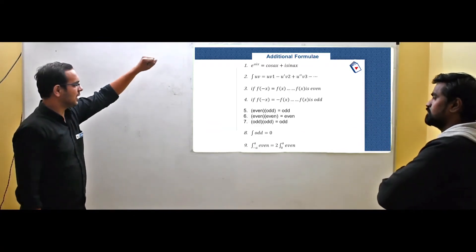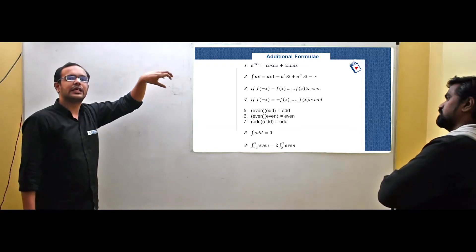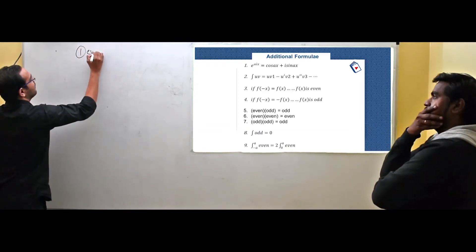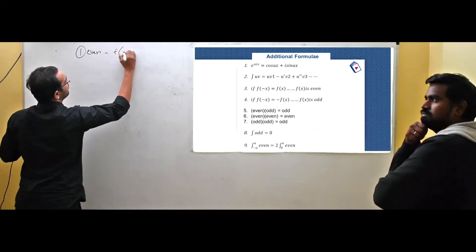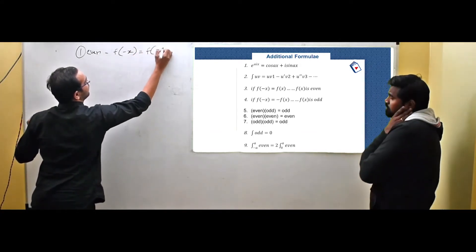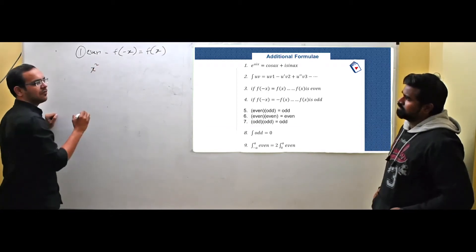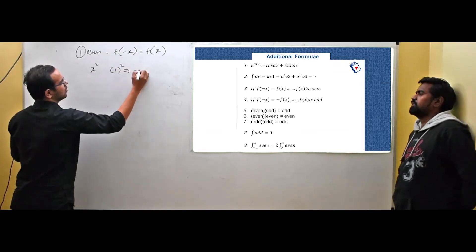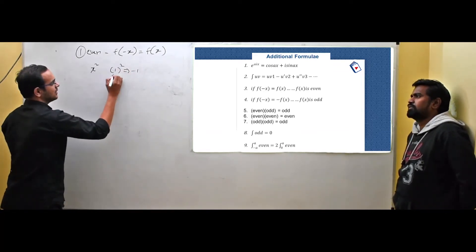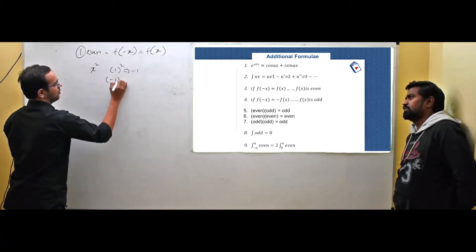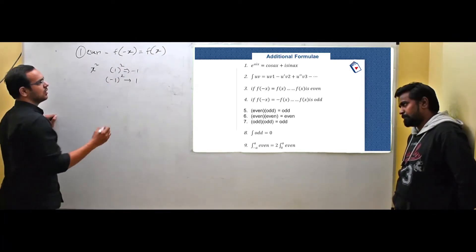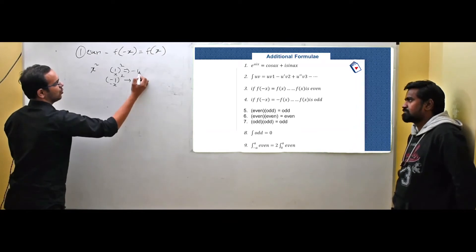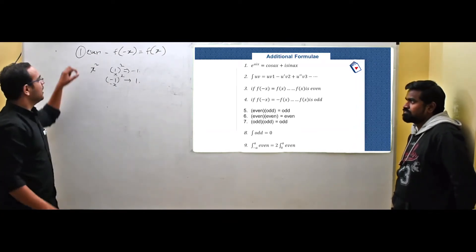The other prerequisite formula involves even functions and odd functions. An even function is defined as: f of minus x equals f of x. For example, x squared is an even function. If x equals 1, then x squared equals 1, and if x equals minus 1, then x squared also equals 1. So f of minus x equals f of x, confirming x squared is an even function. Importantly, cosine is an even function: cosine of minus x equals cosine of x.